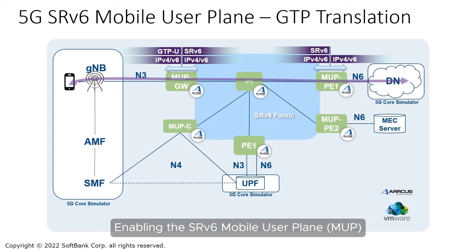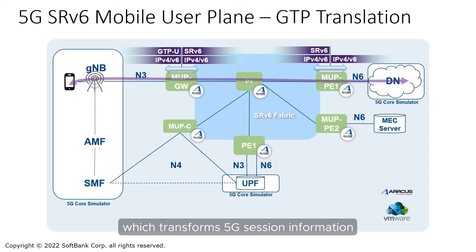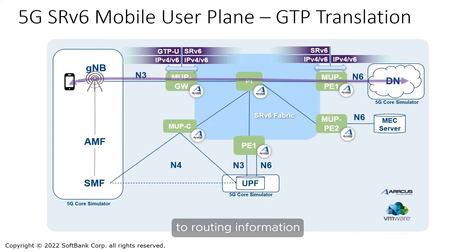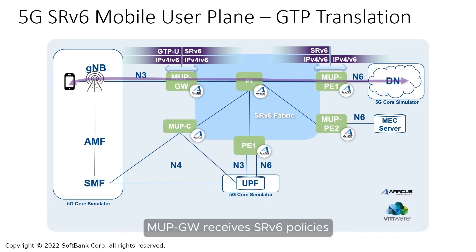Enabling the SRV6 Mobile User Plane, MUP, is done with the addition of a controller, MUP-C, which transforms 5G session information to routing information and advertises it to the MUP gateway and MUP PE VMs.